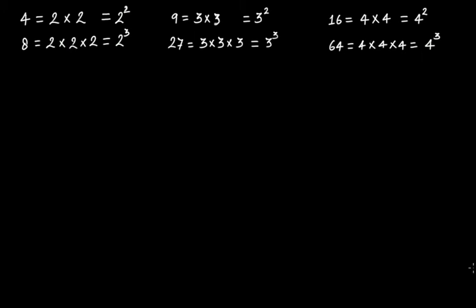We have learned about square roots, square numbers, and perfect squares. In this video tutorial, let's start our discussion on perfect cubes or cube numbers. Here we have the number four, which can be written as two times two — that is two squared — so four is a square number. The number eight can be written as two times two times two, that is two cubed, two raised to the power of three. It means that eight is a cube number or a perfect cube.